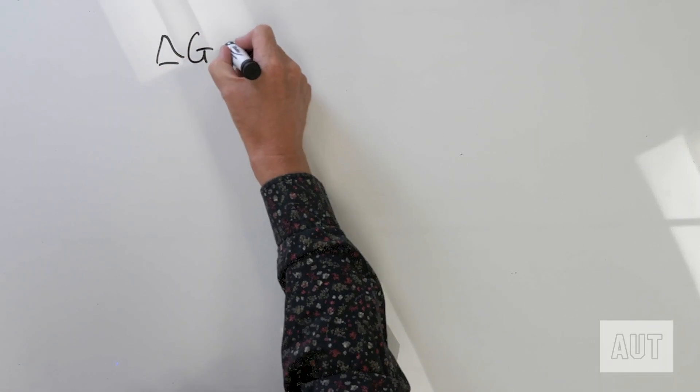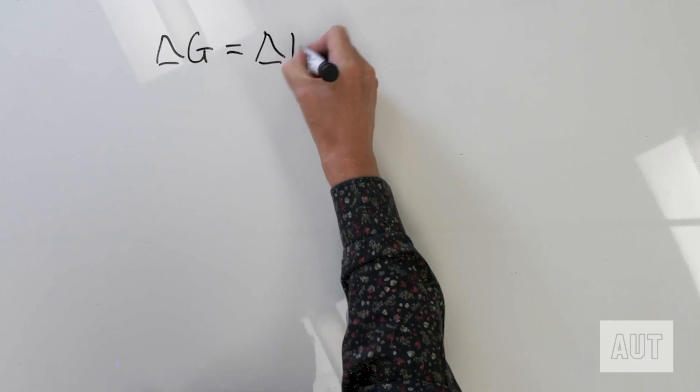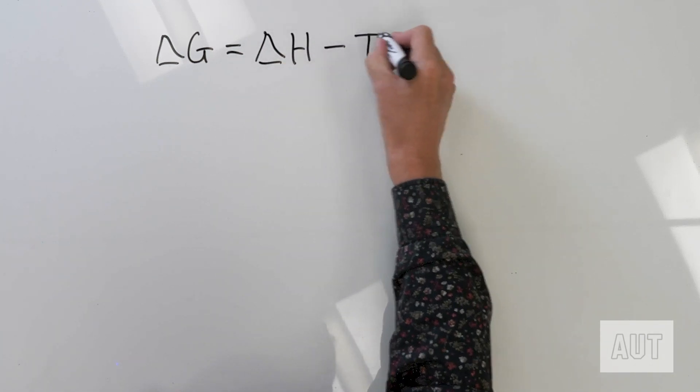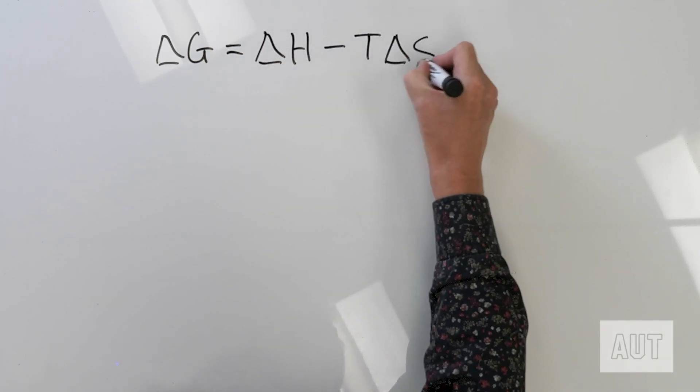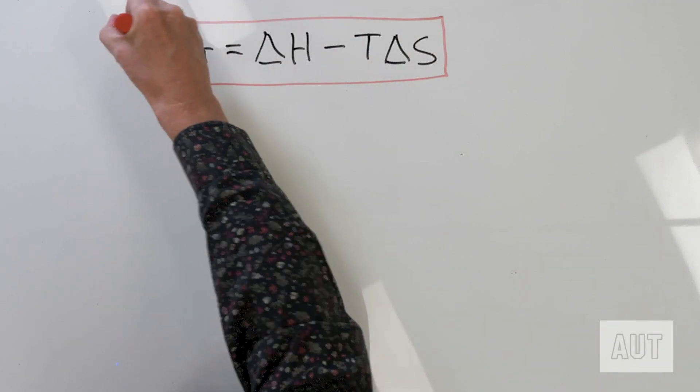ΔG is equal to ΔH minus T·ΔS. Students often ask me which equations they have to know for the final exam — that is definitely one of them. Let's put it in a red box because it is very, very important.